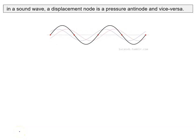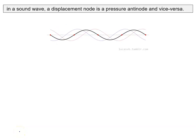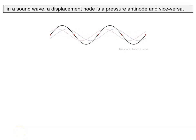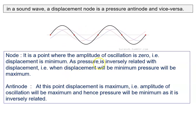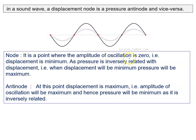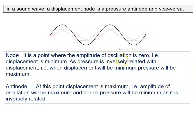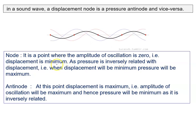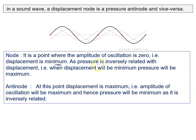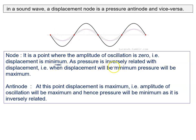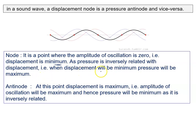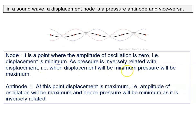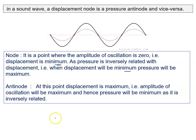In a sound wave, a displacement node is a pressure anti-node and vice versa. A node is a point where the amplitude oscillation is zero, such that displacement is minimum. And we know pressure is inversely related with the displacement, so when displacement will be minimum, pressure will be maximum.